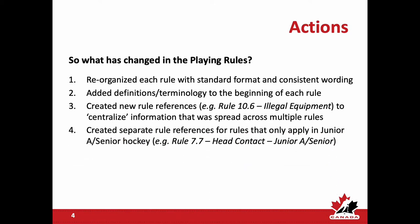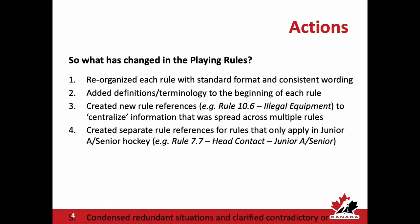Separate rule references and rule numbers specifically for rules that apply to junior and senior only. For example, head contact rule 7.7 is called out by a gray box in the rule book, making it visually obvious that rule pertains only to junior and senior, while rule 7.6 outlines the general application of the head contact rule for minor and female — same penalty, different interpretations depending on the category of play.